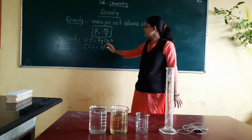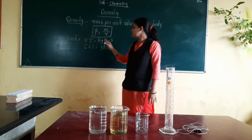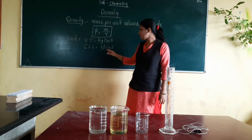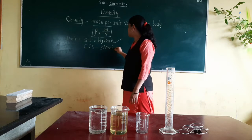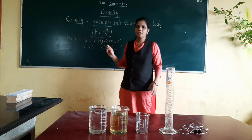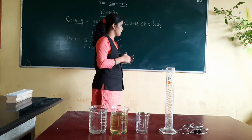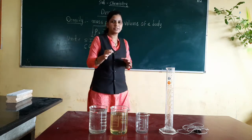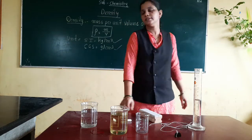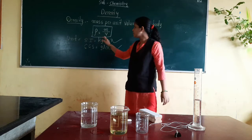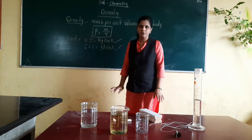The SI unit of density is kg per meter cube, and the CGS unit of density is gram per centimeter cube. We already discussed this yesterday. Now we will see some practical work, but first some basic information. The density formula is mass per unit volume.